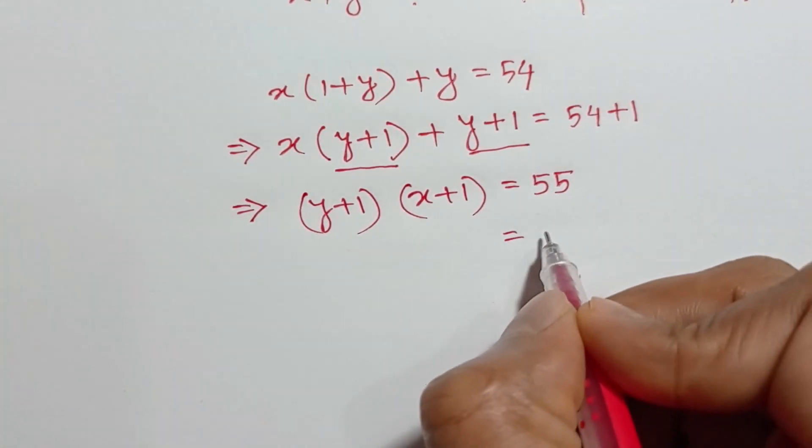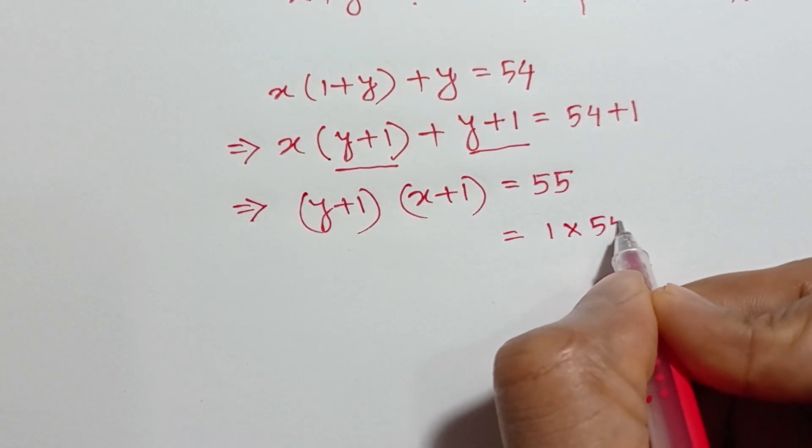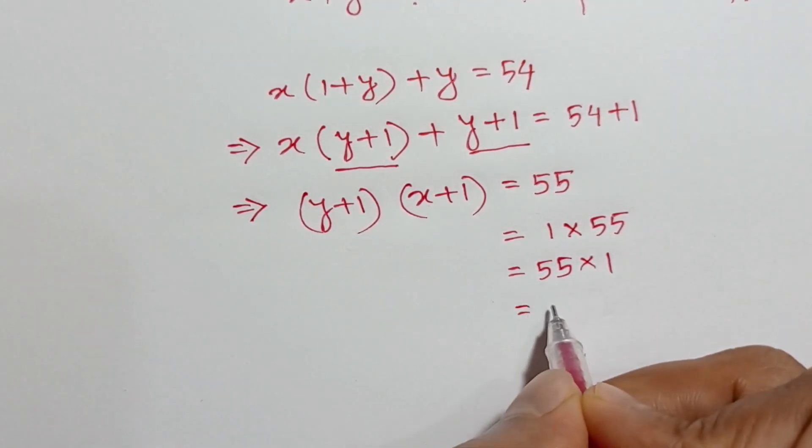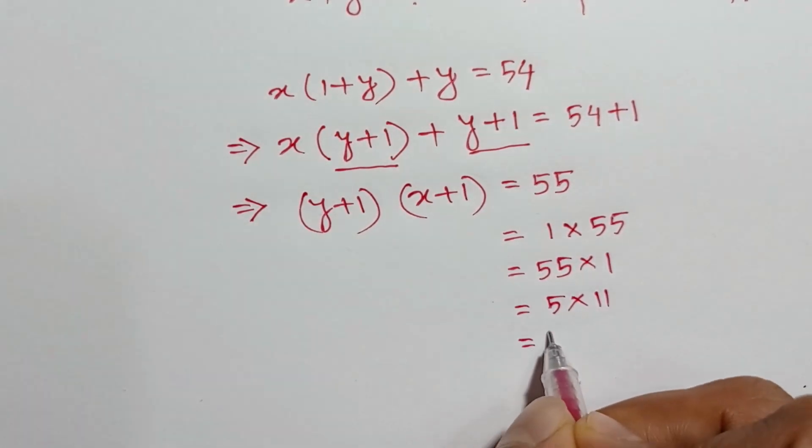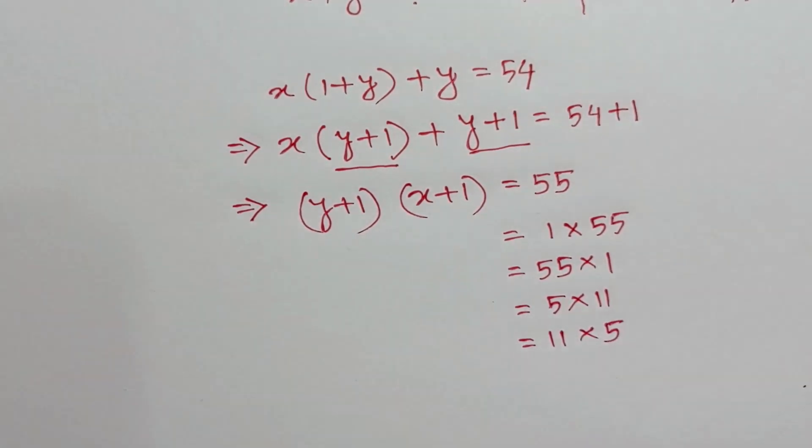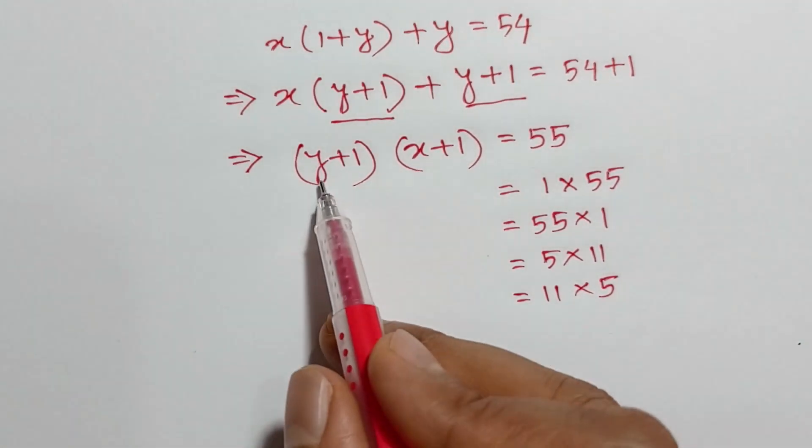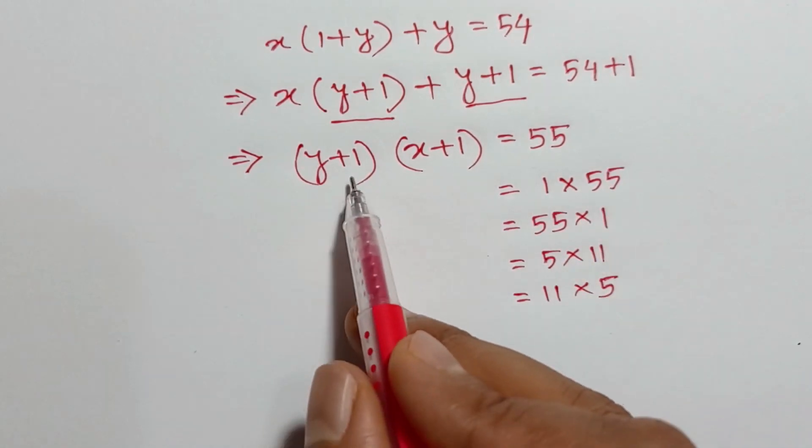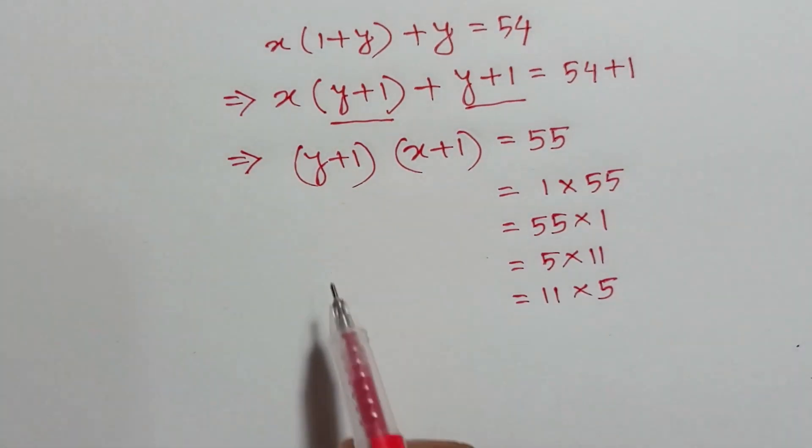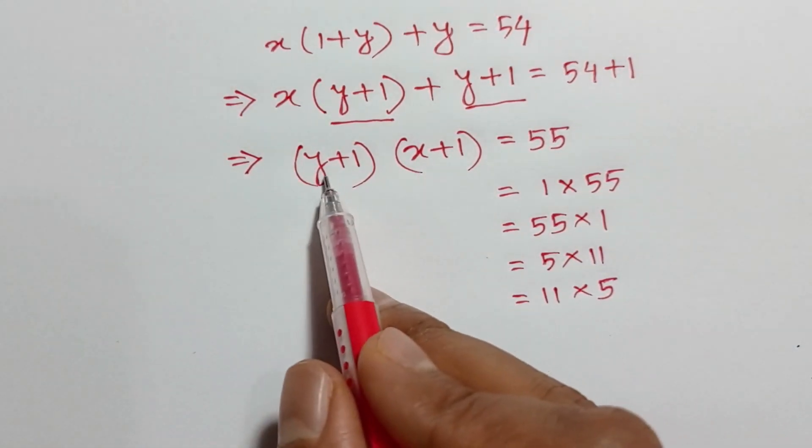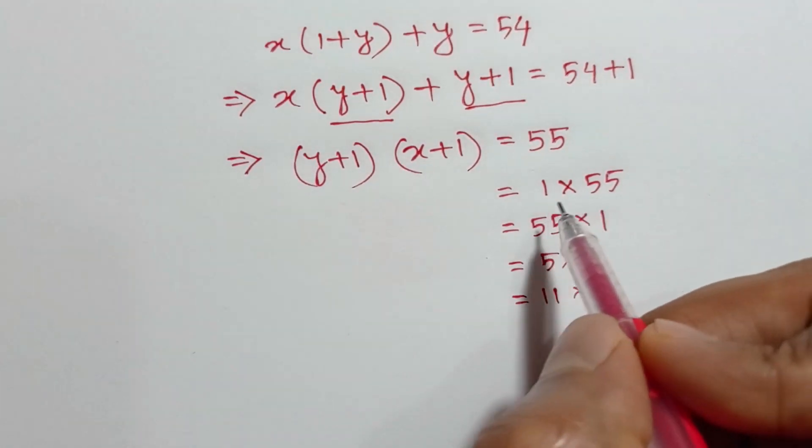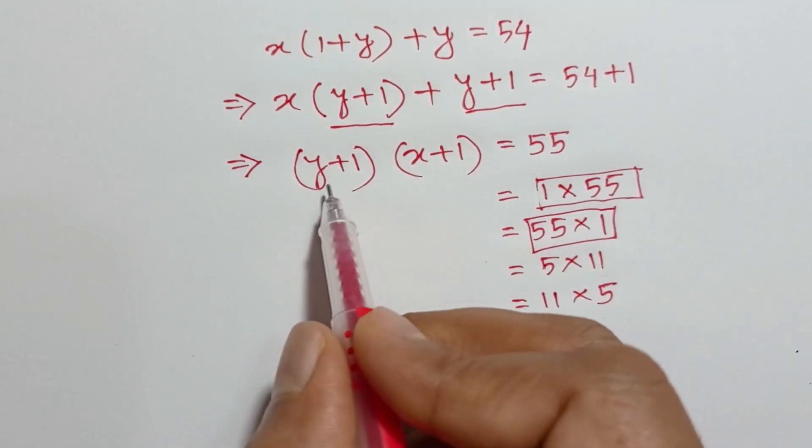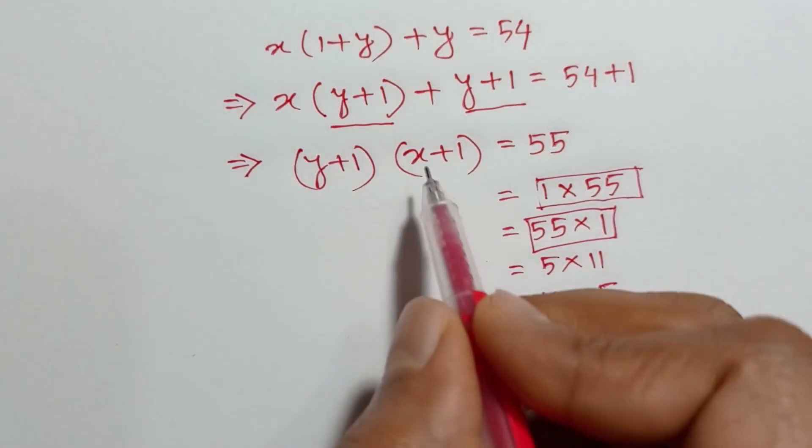Or 55 can be written as 1 cross 55, or 55 cross 1, or 5 cross 11, or 11 cross 5. So y plus 1 may be 1, or x plus 1 may be 55. But x and y both are positive integers, so x plus 1 must be greater than 1 and y plus 1 must be greater than 1. So these two cancel out.